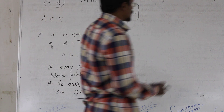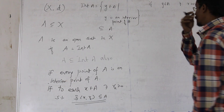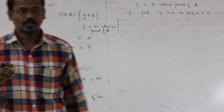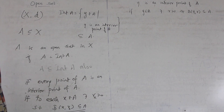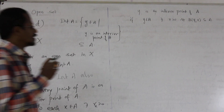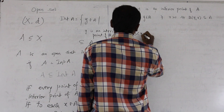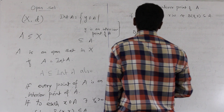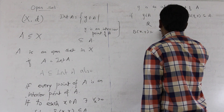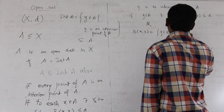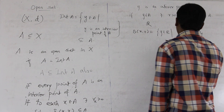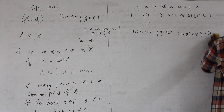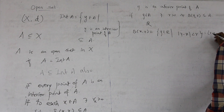Recalling from earlier: the open ball centered at x with radius r in R with the usual metric is the set of points y in R such that |y - x| < r, which is the open interval (x - r, x + r) — a symmetric open interval around x.